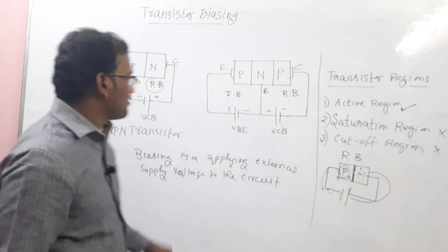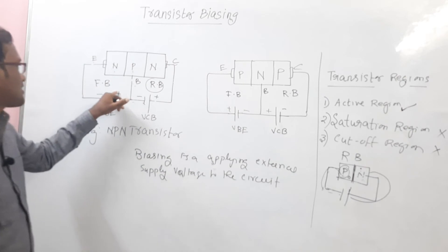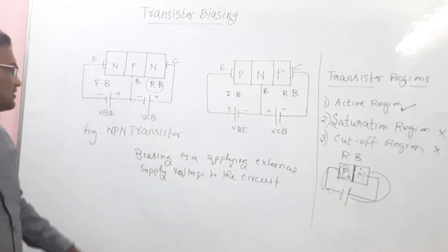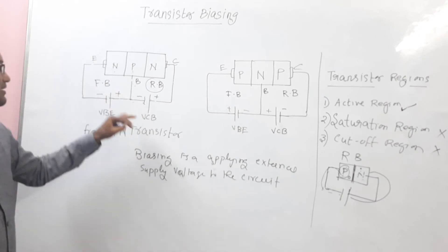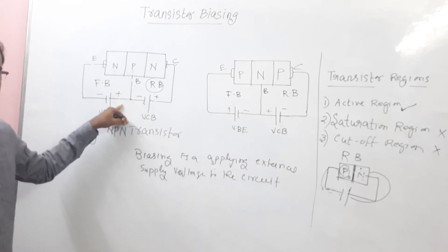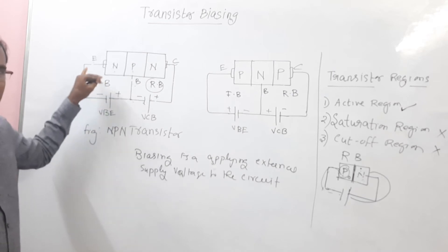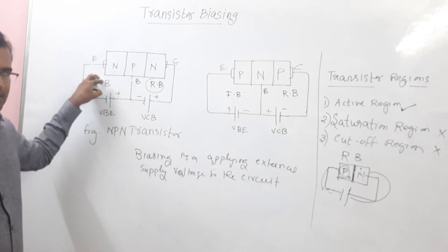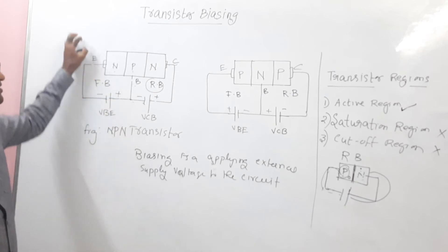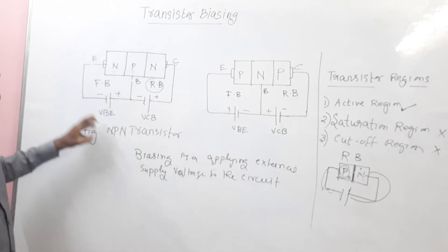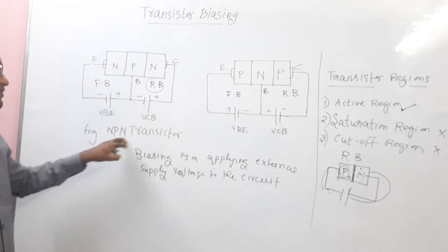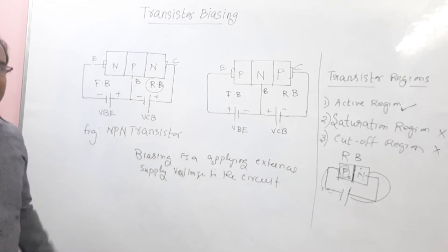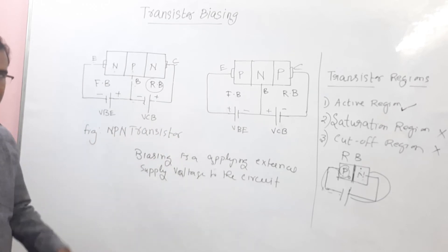So the circuit will act in active region. We can go only for active region. This is how the biasing is connected in the NPN transistor — this is called transistor biasing of NPN transistor.